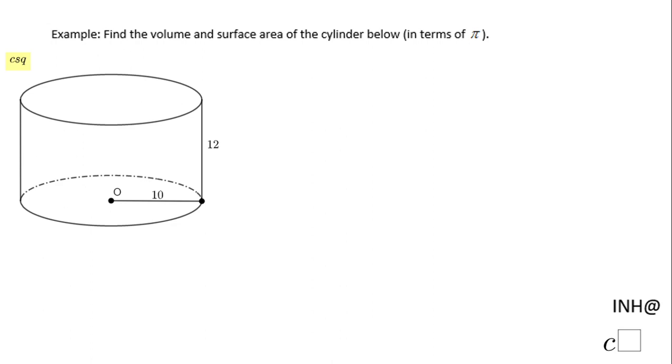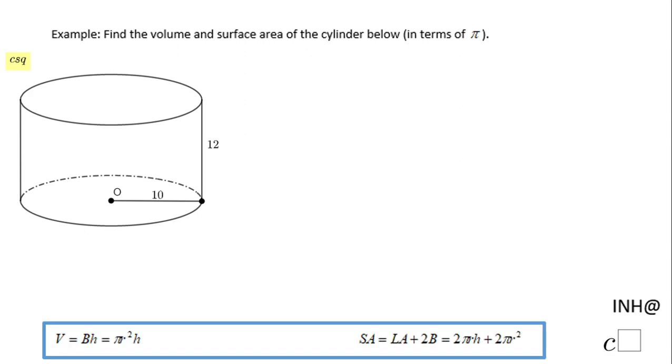Welcome back and I need help at Cisco. In this example we need to find the volume and the surface area of the cylinder below in terms of π. If you notice down here on the left I have the volume, so I'm going to start with the volume. The volume is the area of the base times the height.